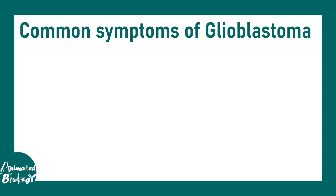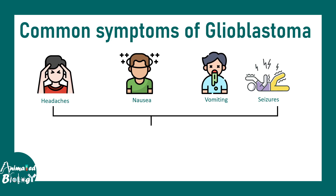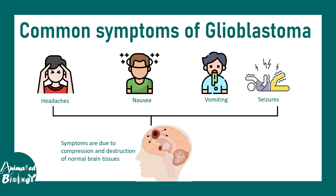Now let's talk about the common symptoms of glioblastoma. There could be headache, nausea, vomiting, and seizures. All these phenotypes observed in glioblastoma patients are due to compression of the nearby tissue as a result of the expanding tumor in the brain.